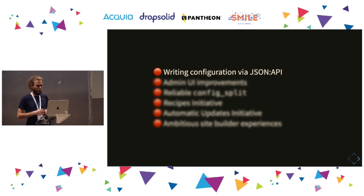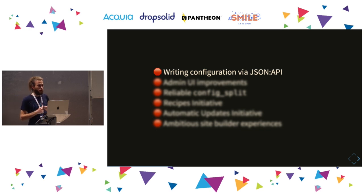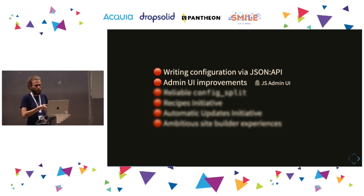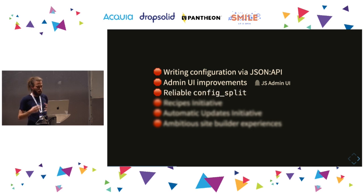I worked on JSON API and API-first things long ago, and one of the frustrating things was that it wasn't possible to write or change configuration via REST, via GraphQL, via JSON API. That was a direct blocker to admin UI improvements — specifically the JS admin UI initiative. All of the validation logic was written into the existing PHP forms, so a JavaScript-based admin initiative can't magically make that PHP code work. We really need configuration to be validatable in a more structured approach.